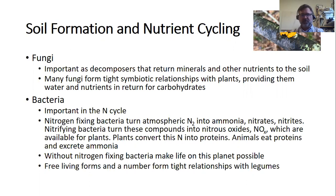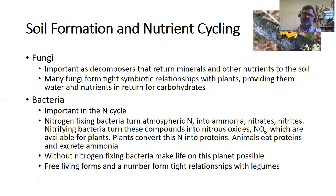Bacteria — the most important function for bacteria on a global scale is the nitrogen cycle. You have nitrogen-fixing bacteria that turn atmospheric nitrogen (N₂) into ammonia, nitrates, and nitrites. A small amount of atmospheric nitrogen is converted during lightning storms, but not at the scale needed to maintain life as we know it. We need nitrogen to make proteins, but most of the nitrogen around us is unavailable. Even though the atmosphere is 70% nitrogen, you cannot use that to make proteins.